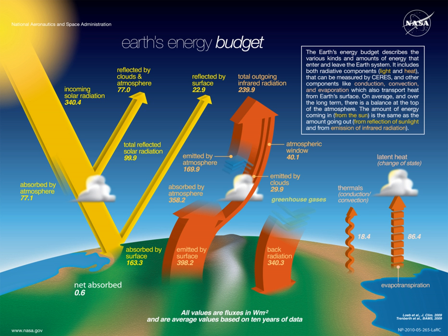In spite of the enormous transfers of energy into and from the Earth, it maintains a relatively constant temperature because, as a whole, there is little net gain or loss. Earth emits via atmospheric and terrestrial radiation — shifted to longer electromagnetic wavelengths — to space about the same amount of energy as it receives via insolation. To quantify Earth's heat budget, let the insolation received at the top of the atmosphere be 100 units, where 100 units equals about 1,360 watts per square meter facing the Sun, as shown in the accompanying illustration.